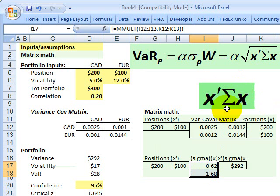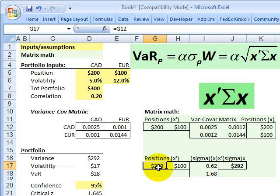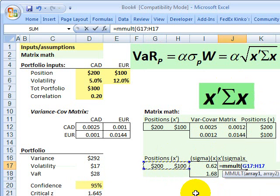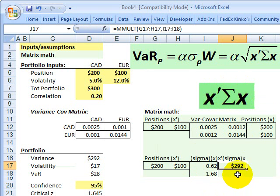Now what I've produced here in this column vector is the product of these two. So then I only need to multiply X transposed, that's right here, by this product, which is right here. I'll take that out so I can show you. MMULT, I multiply the transposed position vector by the product that we already did, the product of these two, close parens, and I get 292 million. So that is the portfolio variance in dollar terms.